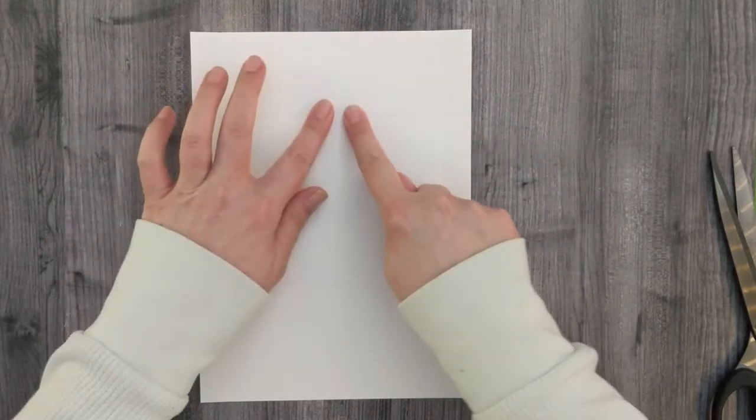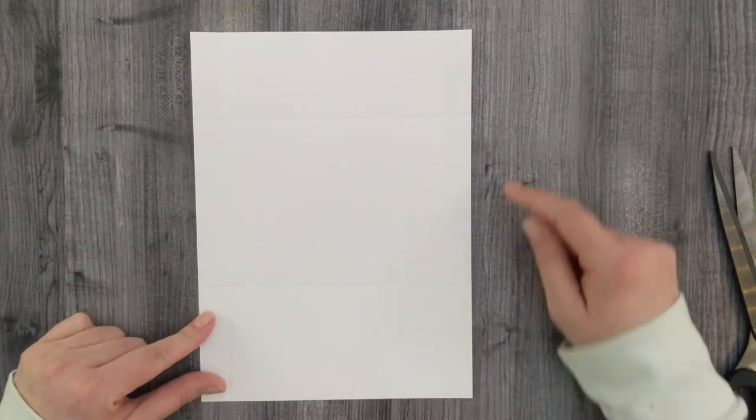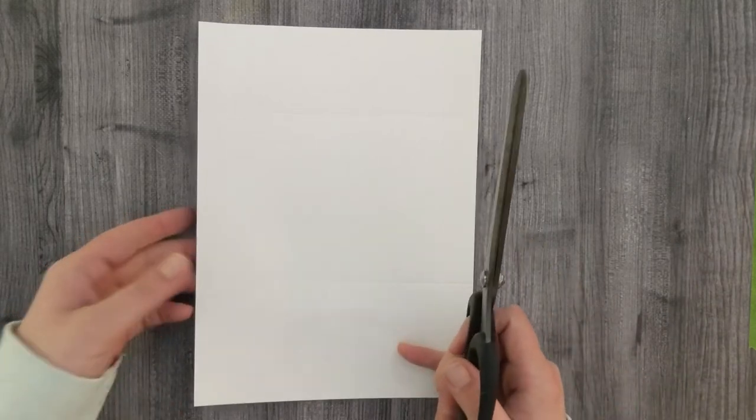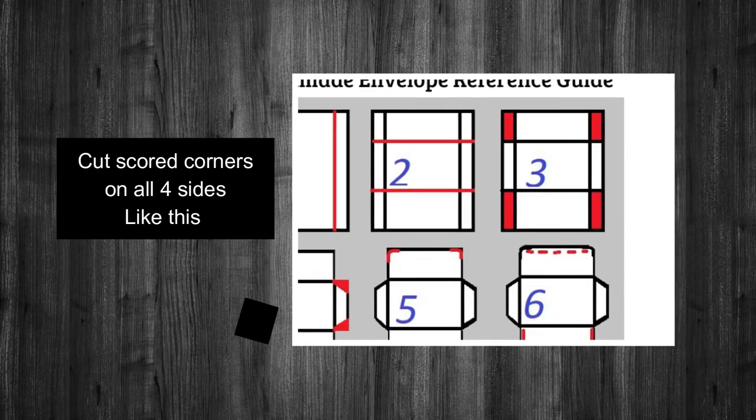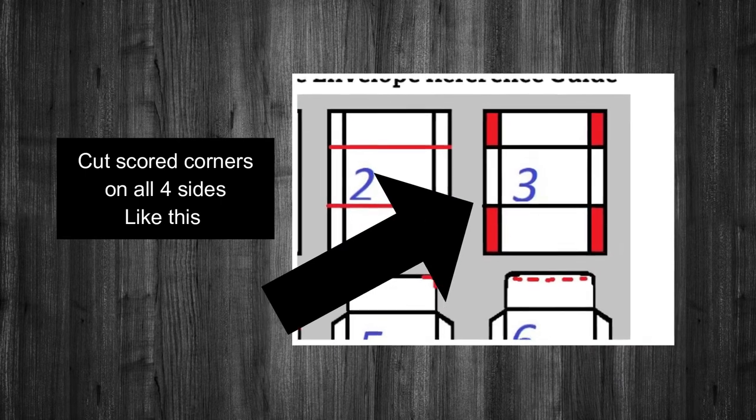Now you'll have a smaller flap and a larger flap, and we're going to trim off all four scored corners like this, shown in the red areas.